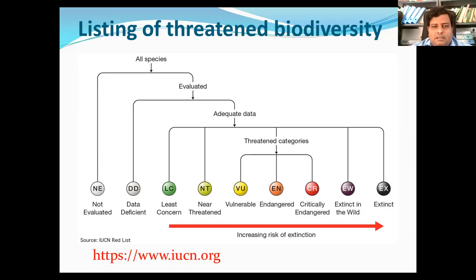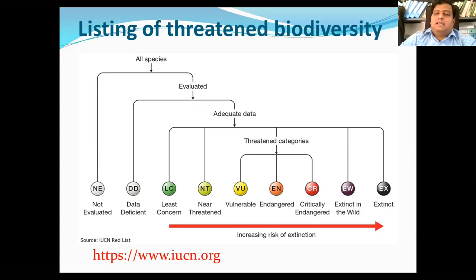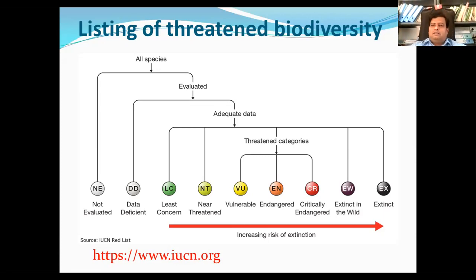Not Evaluated is the category that includes nearly 1.9 million species described in science, but which have not been assessed by the IUCN. That is why they come under Not Evaluated.